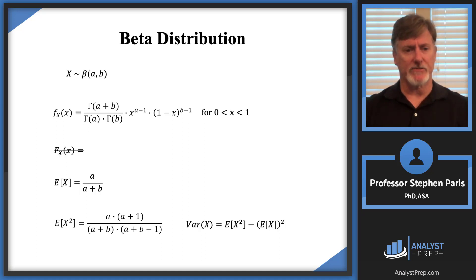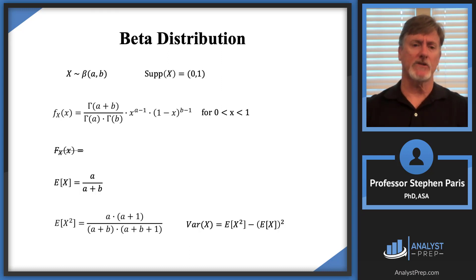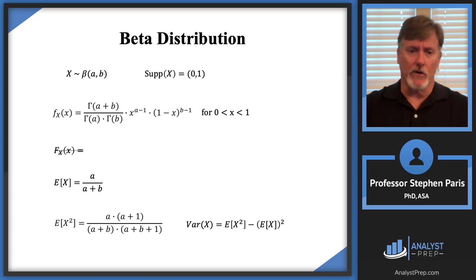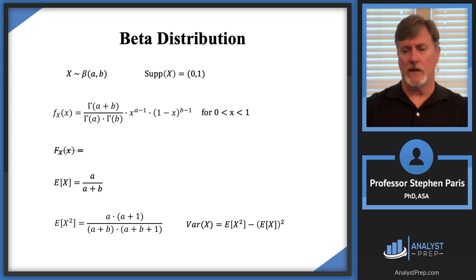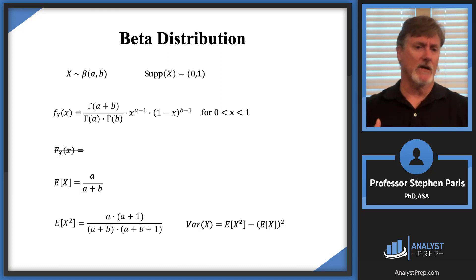In the density function expression, the support for a beta distribution is between zero and one. The values of the random variable X are between zero and one. A lot of times what the beta distribution is modeling is an unknown probability — you don't know what some probability is, so you model it with a random variable. Since it's representing a probability, it's going to be between zero and one.